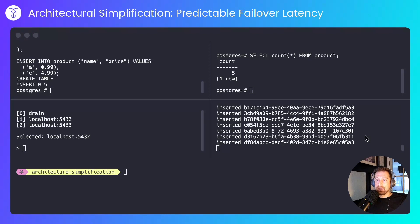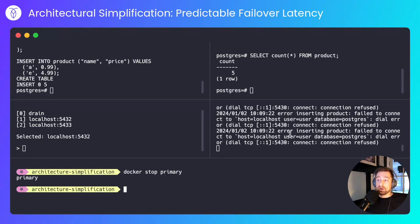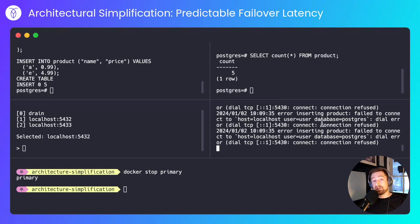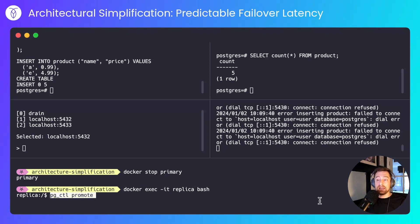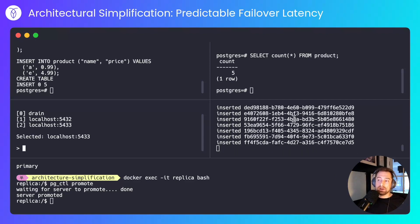Now I'll take down the primary node. The application is no longer happy — we're getting a bunch of errors because every 50 milliseconds the application tries to write to the database and it's failing. Because I was replicating changes to the secondary, I can now hop onto the replica and promote it to be primary. That's promoted now, and all I have to do is switch my load balancer to point to the secondary. And now we carry on happily.